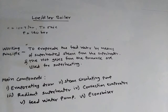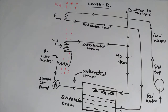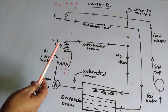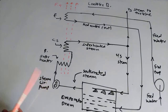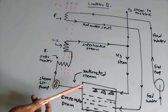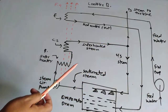Now we discuss the schematic representation of the Löffler boiler. This schematic shows the main components: the economizer, the convection superheater, the radiant superheater, the steam circulating pump, the evaporating drum, and the feed pump.